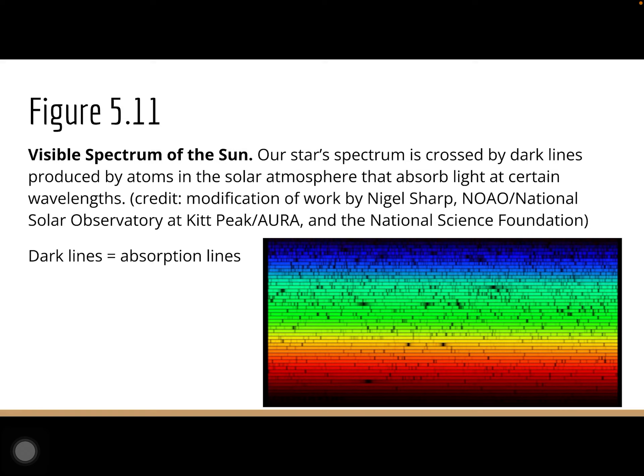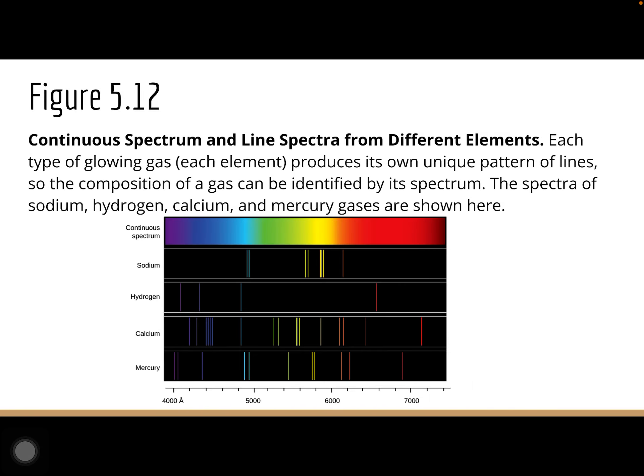We're also going to talk about the visible spectrum of the sun. Our star's spectrum is crossed by dark lines produced by atoms in the solar atmosphere that absorb light at certain wavelengths. Every one of these dark lines is called an absorption line — lines that absorb sunlight and show different elements being expressed. In the spectra gizmo you were working on Friday, those lines showing up were being absorbed, showing certain elements expressed at certain wavelengths.